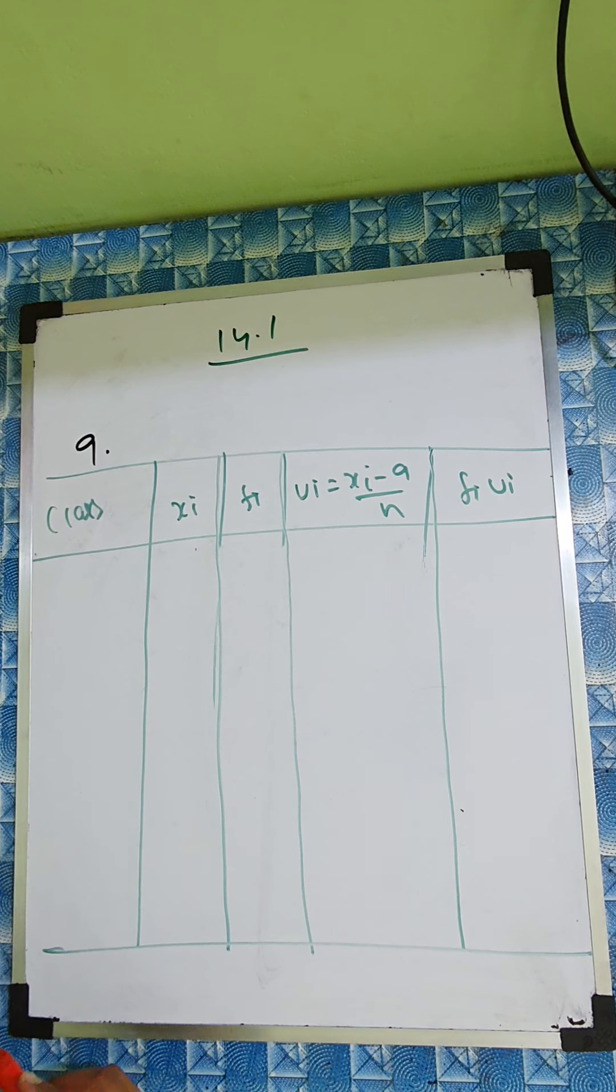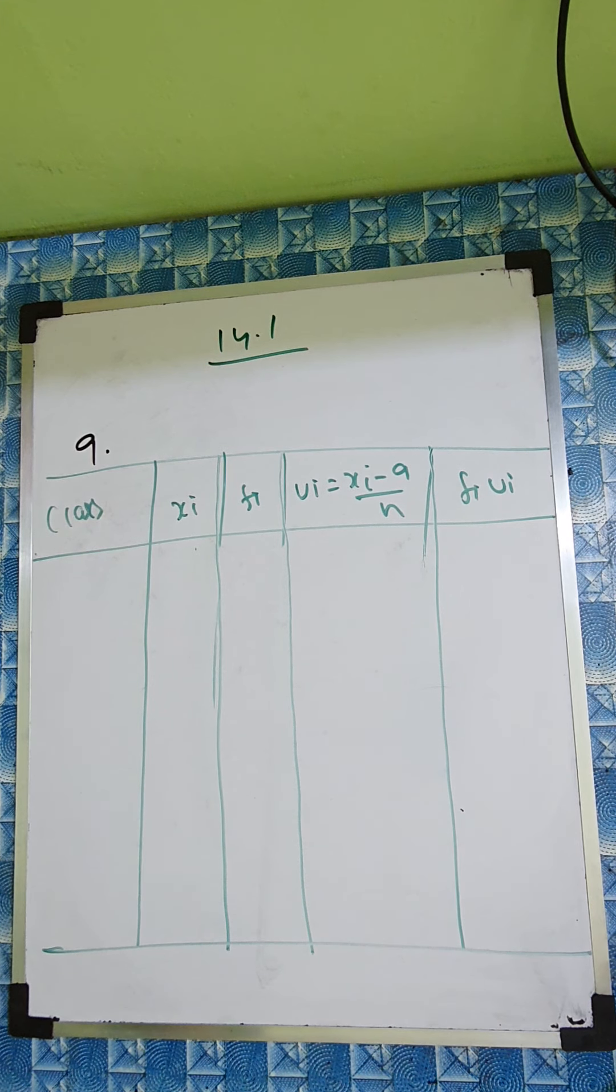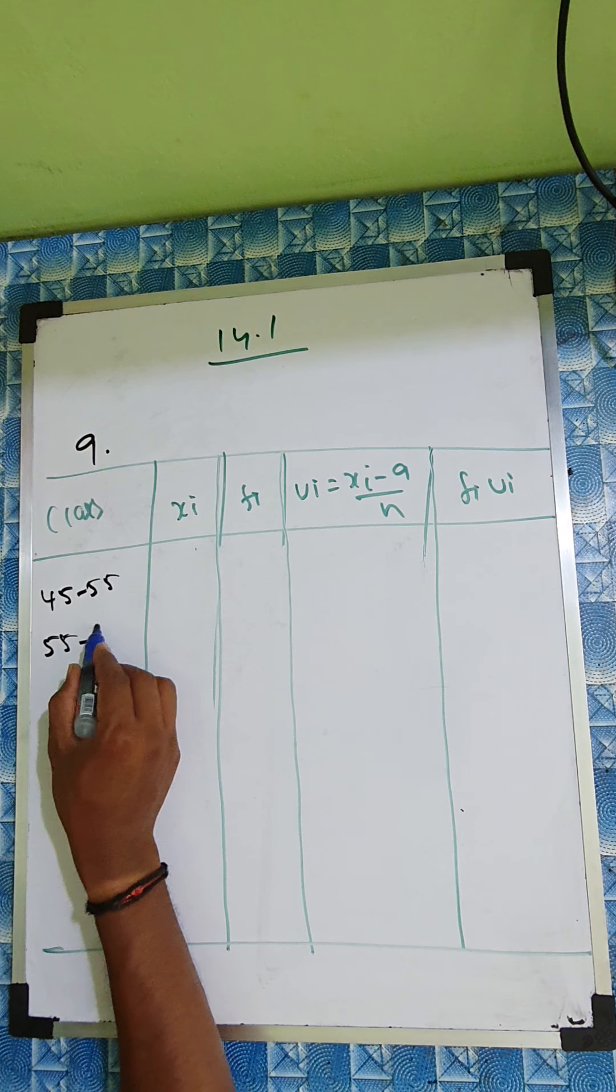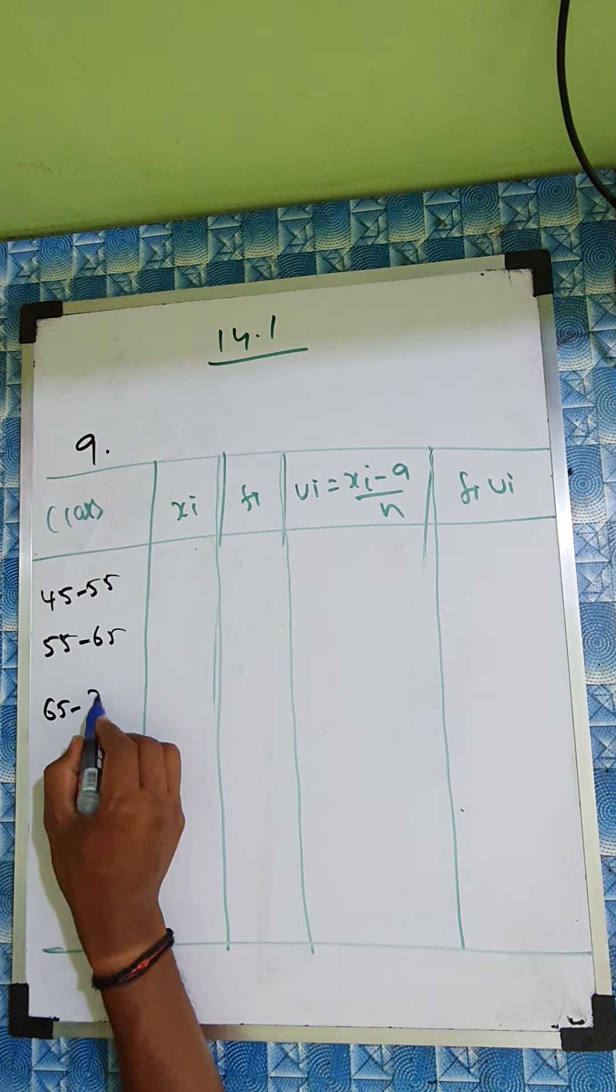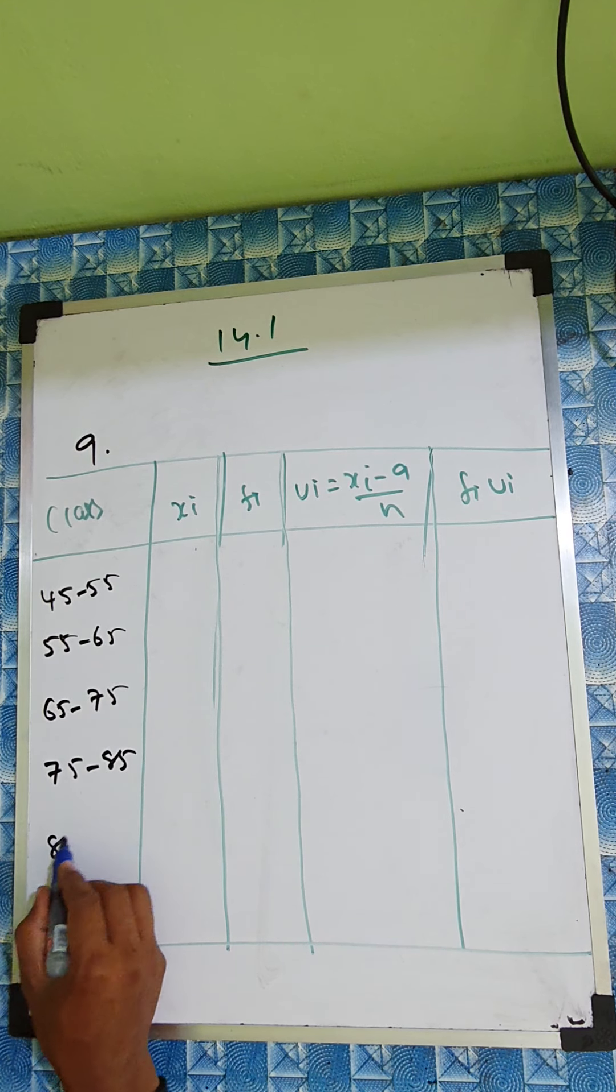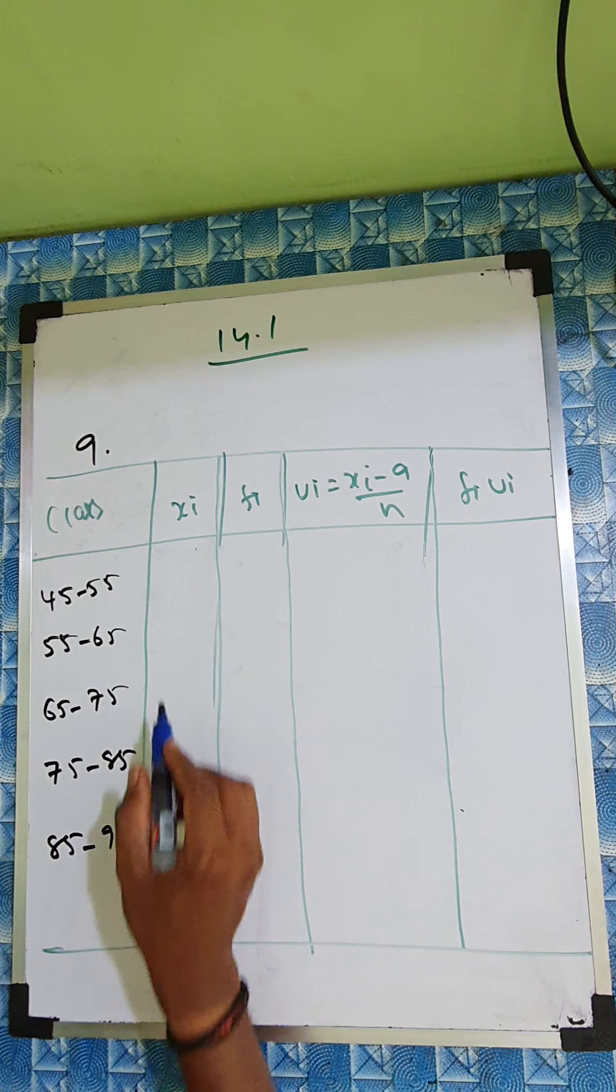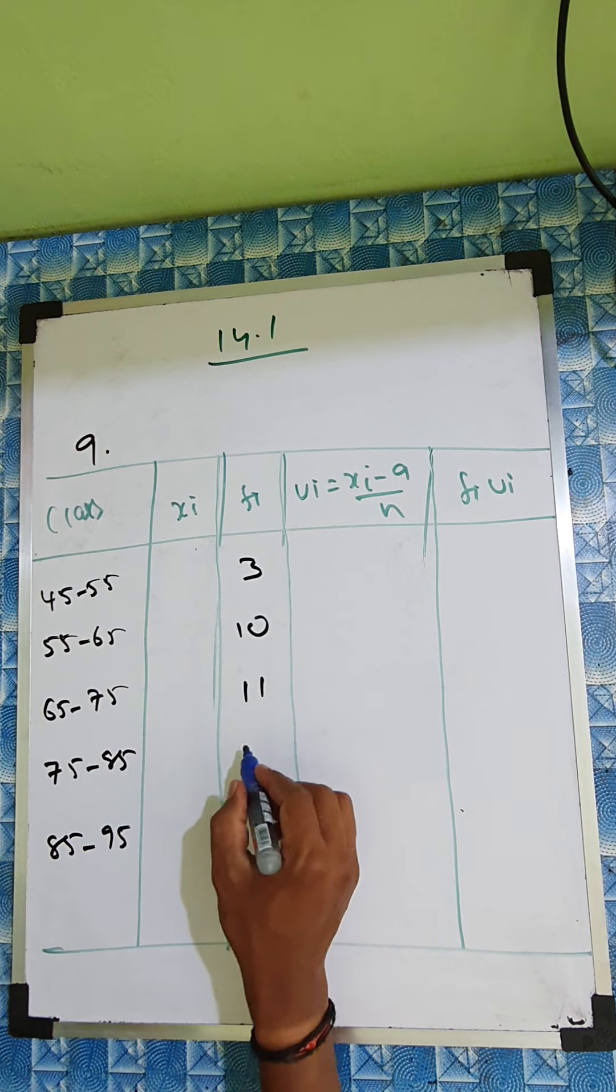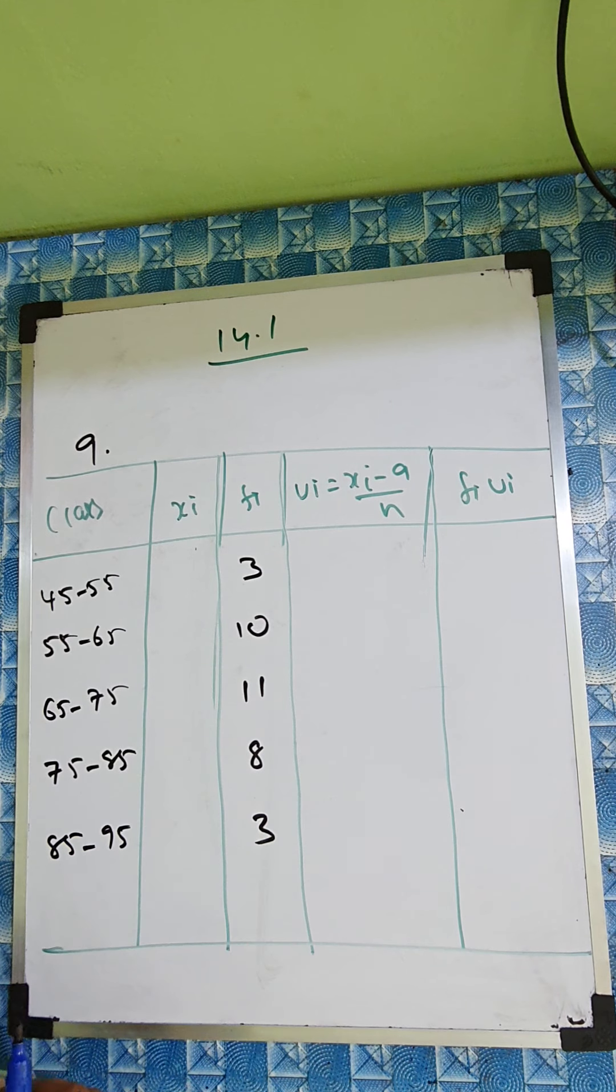Now class is given: 45 to 55, 55 to 65, 65 to 75, 75 to 85, 85 to 95. So here 3, 10, 11, 8, and 3.